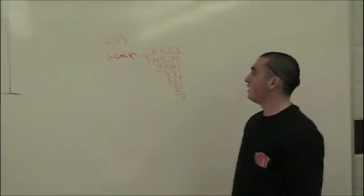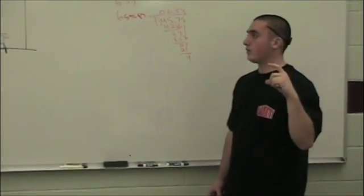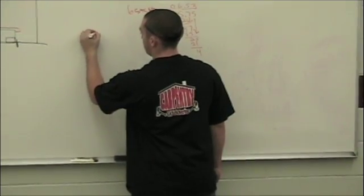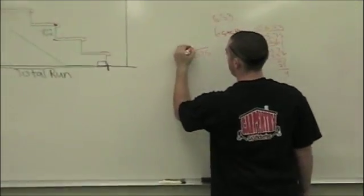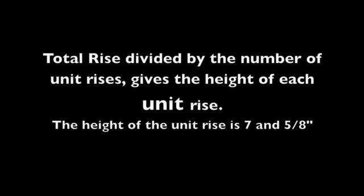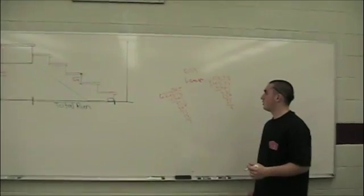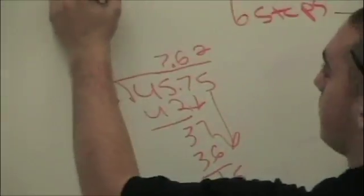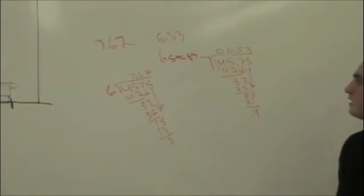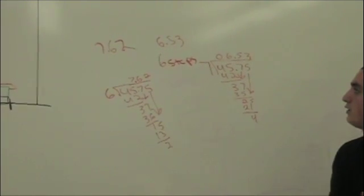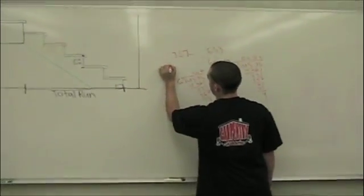Once you get your steps, you have to take your steps and divide by 45 and 3/4 again to figure out how big the unit rise is. Once you get 7.62, you have to convert the decimal back into a fraction. The closest fraction to 0.62 is 5/8, so you have 7 and 5/8.